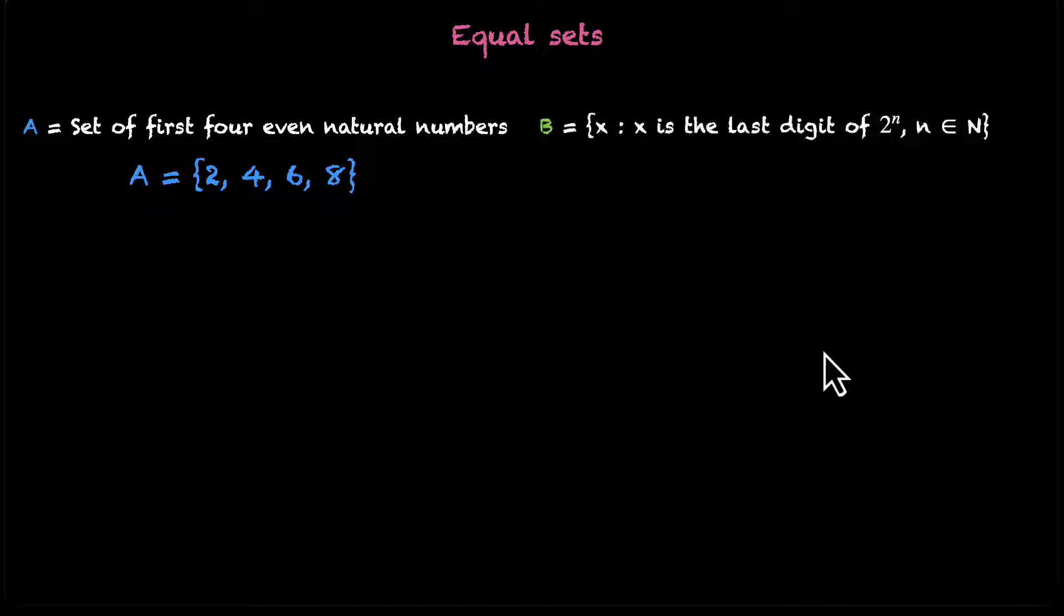Let's take another set B. This is where we're looking for x, where x is the last digit of 2 to the power n, where n belongs to natural numbers. This in itself is a good problem. You can pause the video and think about it. Okay, so let's do this together. We're looking for last digits of powers of 2. The first power is 2, then we have 4, then we have 8, then we have 16.